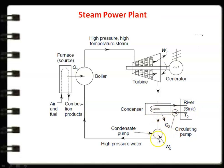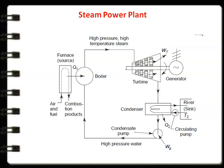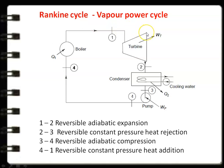The condensate is recirculated back to the boiler using the pump. So in a simple steam power plant, we have a boiler where we supply heat energy to convert water into steam, a turbine which converts the enthalpy of steam into work, a condenser where the steam is condensed back to liquid, and a pump which recirculates the water back to the boiler. These are the four basic components of the steam power plant.